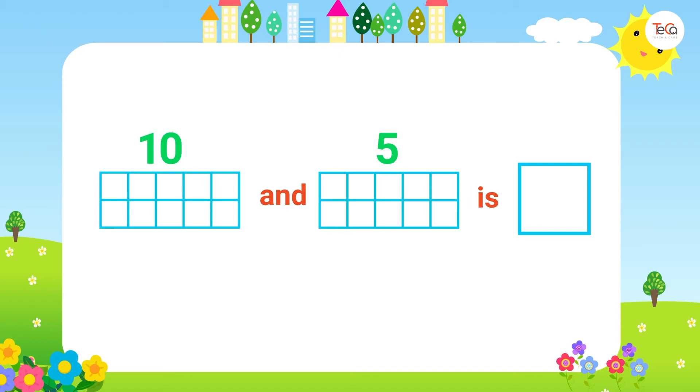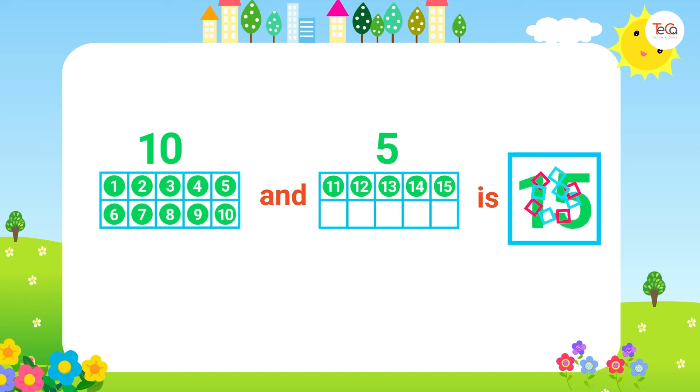Next, 10 and 5 is 15. We can draw 10 dots and 5 dots like this to have 15 dots that show number 15.